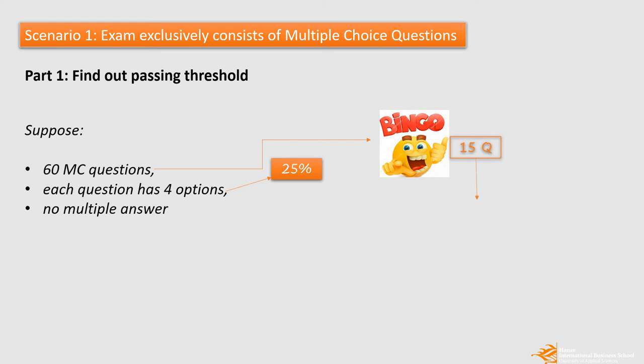In contrast to that, there are only 45 questions left that students have to use their knowledge to select the options. In IBS, the passing grade of the exam is 5.5. That means students have to answer the questions more than 55% correctly. So this 55% is only applied to 45 questions.